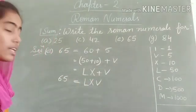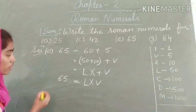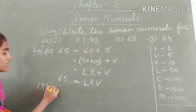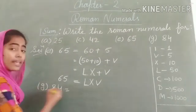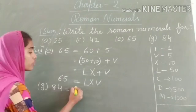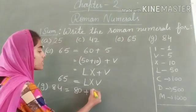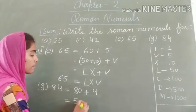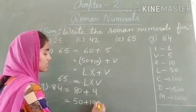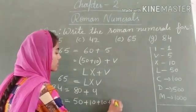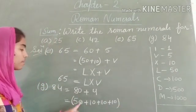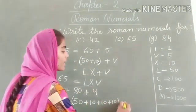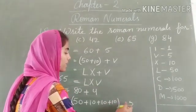The last part I am going to solve for you is part G: 84. How can I write 84? 84 can be written as 80 + 4. Now, 80 can be written as 50 + 10 + 10 + 10. This equals 80. And 4